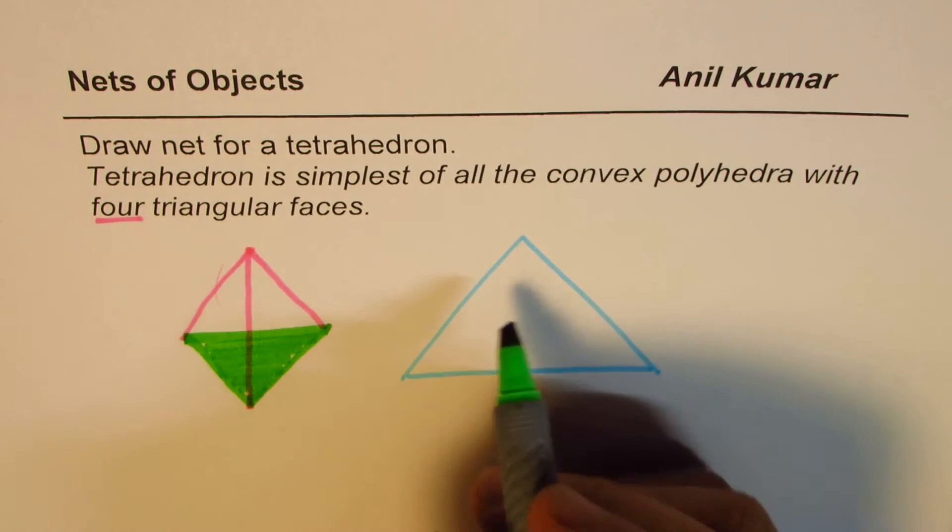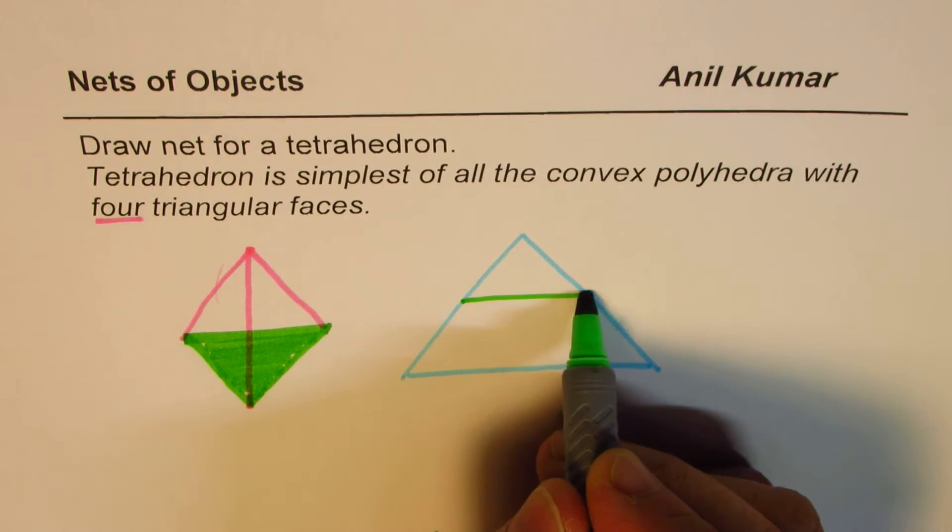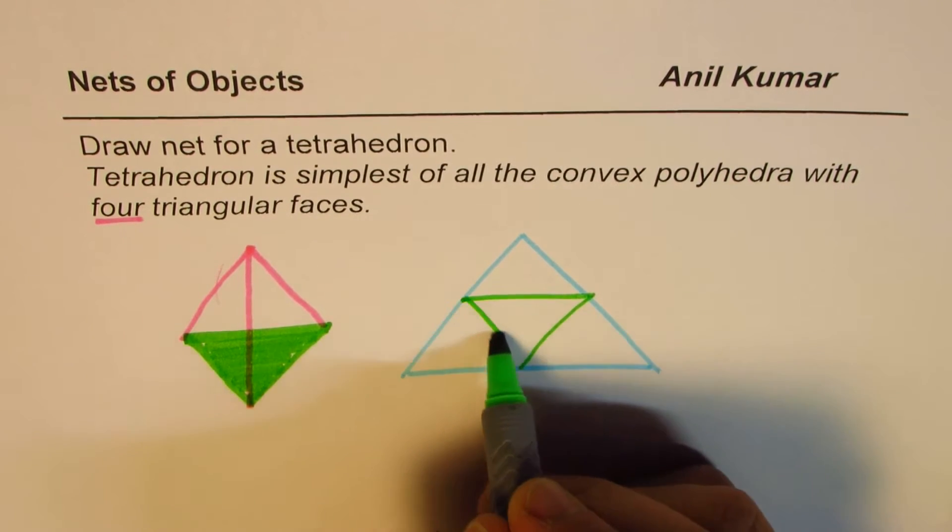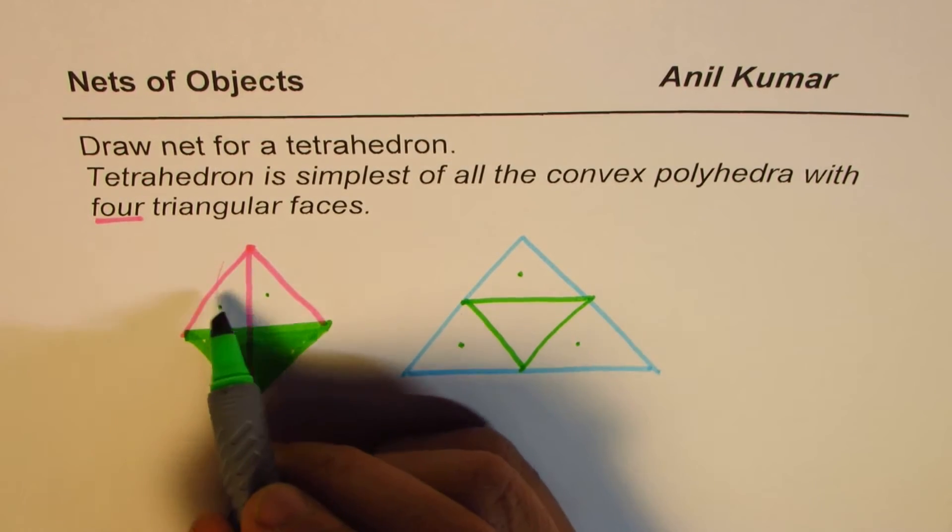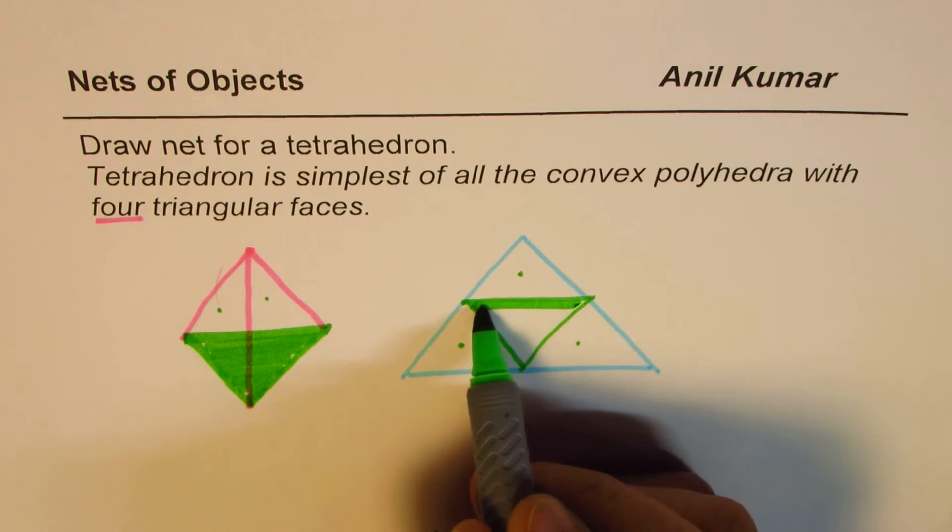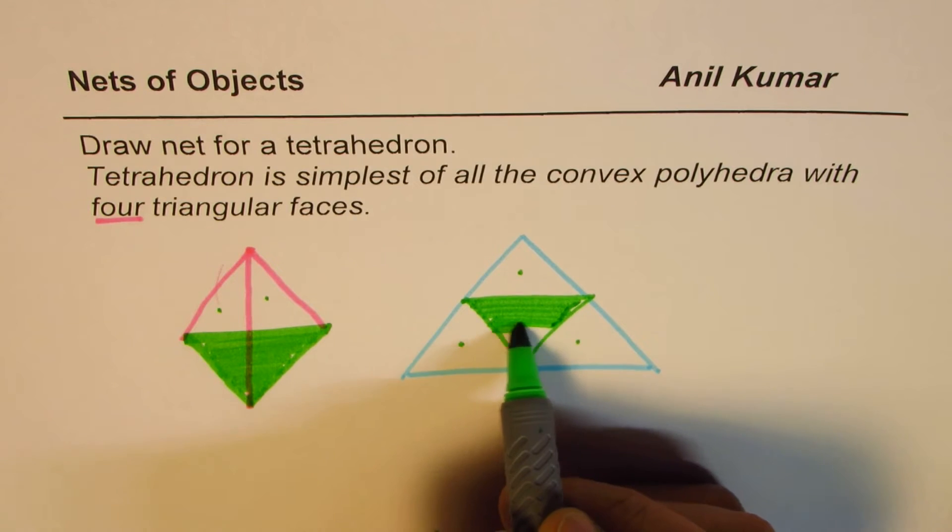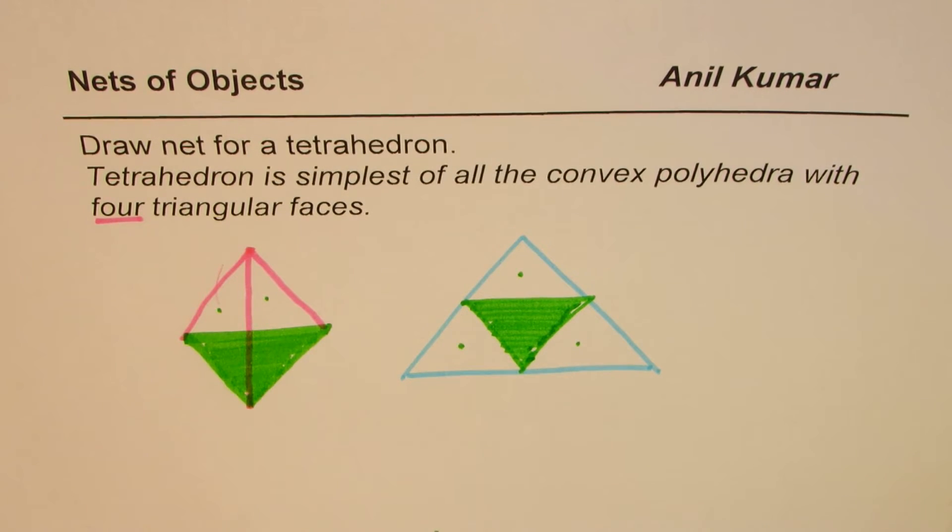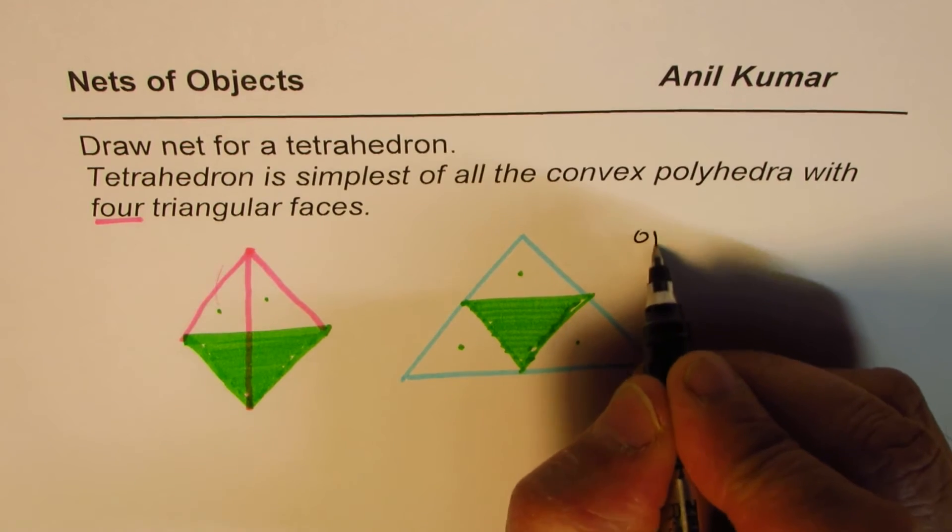I could have this base right there in the center, and these are the four triangular faces which open up. So that could be a net for this particular solid. Now the question is: can you draw another net for the same thing? So this is option one.